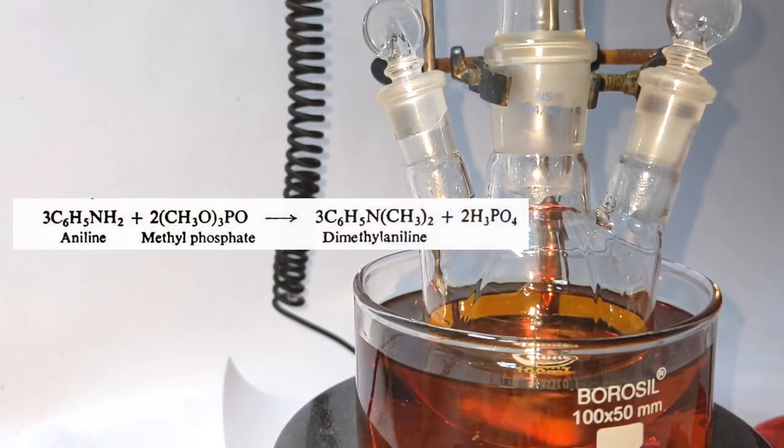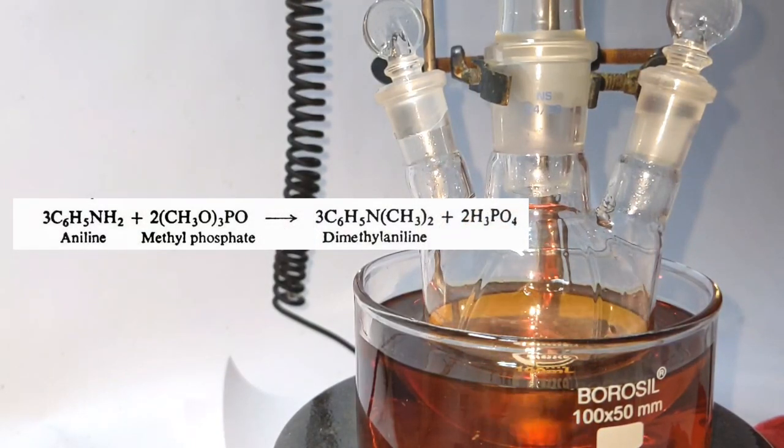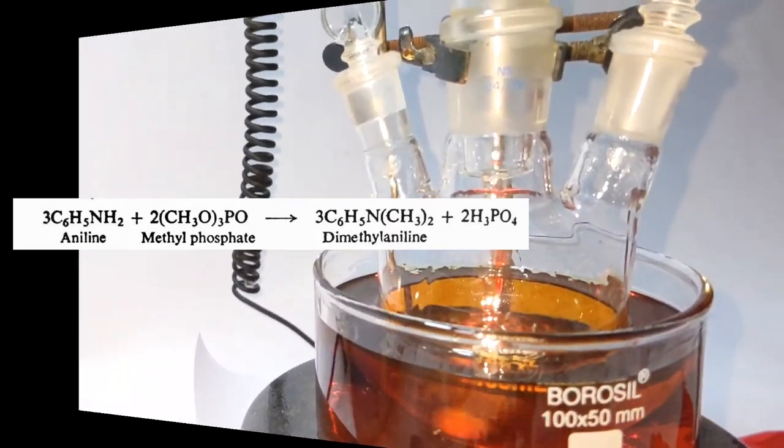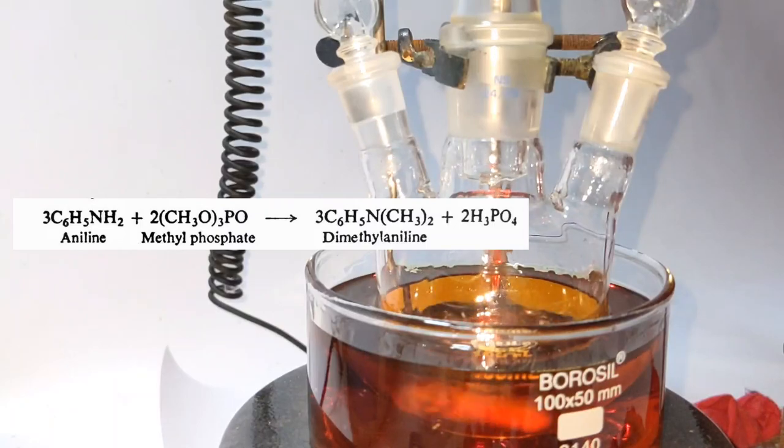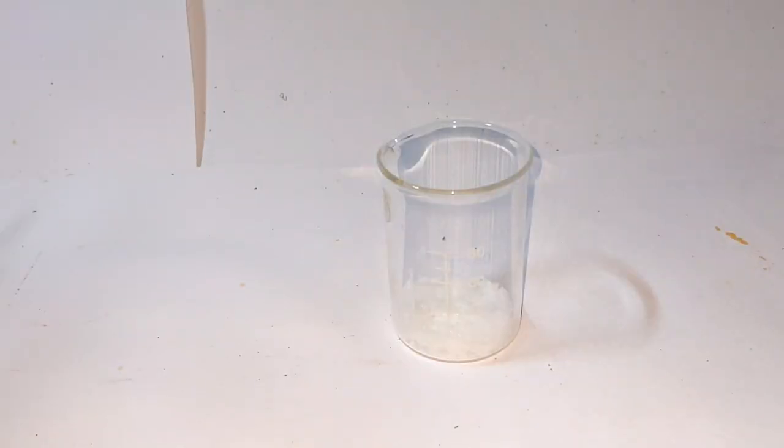Trialkyl phosphates like trimethyl phosphate here can function as an alkylating agent and they result in N-alkylation of aryl amines, in this case dimethylation of aniline.